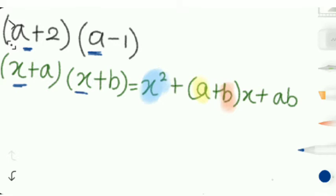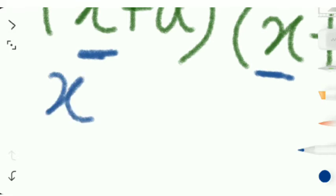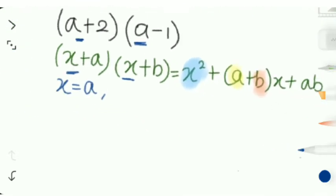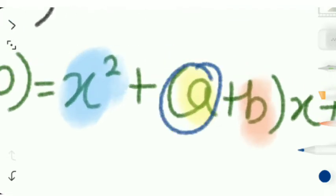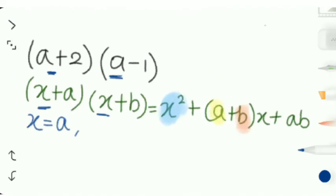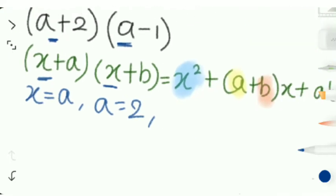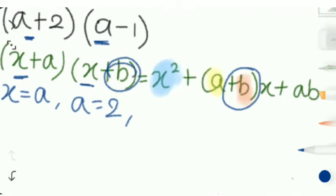Now we're going to find what a is equal to. A is over here so a equals 2. And what is b equal to? B is equal to minus 1.